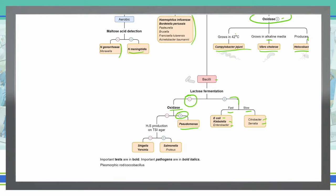If we are oxidase negative, we are going to check its hydrogen sulfide production on our TSI agar. If it does produce hydrogen sulfide, then we're talking about Salmonella and Proteus, or Shigella and Yersinia when it does not produce hydrogen sulfide.